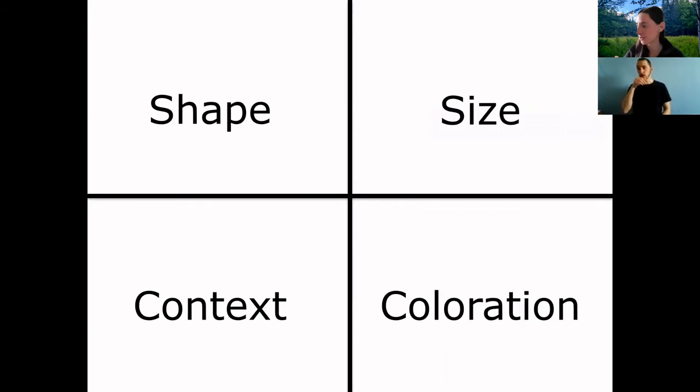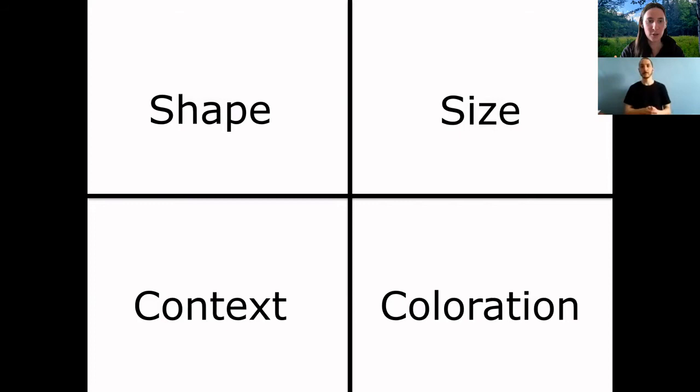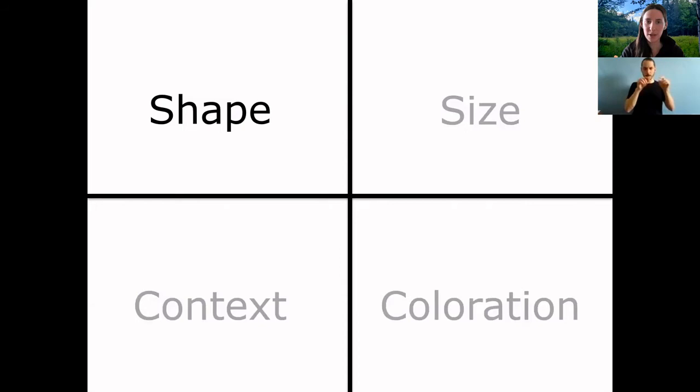We'll move on to the four key things important to identifying birds — and really anything in life. I have an orange here as an example. We're going to look at its shape, size, context, and coloration. A lot of different things can be round, around this size, a food item, or orange colored — however the combination of these four things tells you it's an orange nearly every time. We'll use these same four clues when looking at birds.